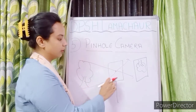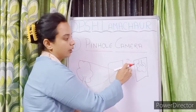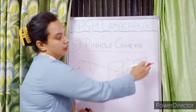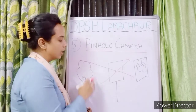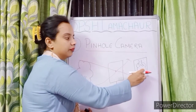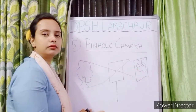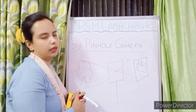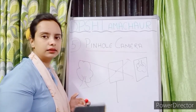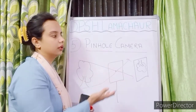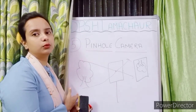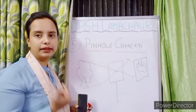As you can see, the light from the lower part goes to the upper side of the screen and the light from the upper part goes to the lower side. That is why in a simple pinhole camera — without a lens — we see an inverted image of any object we try to see through it.